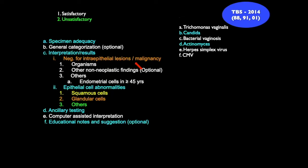Under negative for intraepithelial lesion, if there are any organisms it is better to mention them. Common organisms seen in the PAP smear are: Trichomonas vaginalis, Candida, bacterial vaginosis, Actinomycosis, Herpes simplex virus, and CMV. Chlamydia cannot be seen on cytology — it can only be identified on ancillary testing. I will also be showing a picture of microfilaria in the PAP smear, which is very common in India — it comes from the male partner through seminal fluid and may appear in exams.